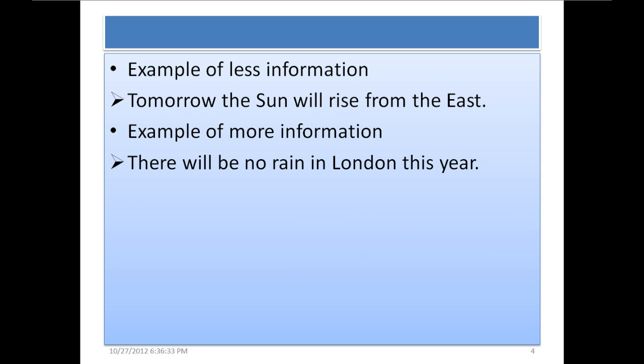Example of less information: Tomorrow the sun will rise from the east. This is not any kind of information for most people because we already know that sun rises from the east. The probability is 1 or 100% for sun to rise from the east. If the probability of any event is 100% or 1, then the information content in it is 0.